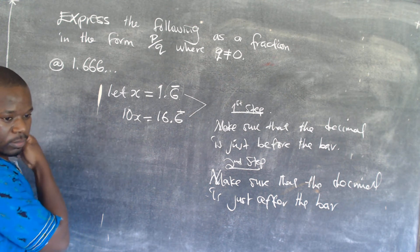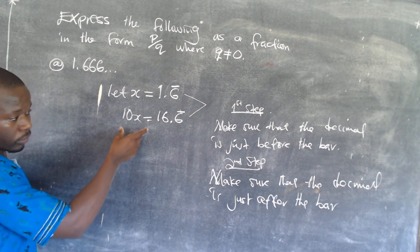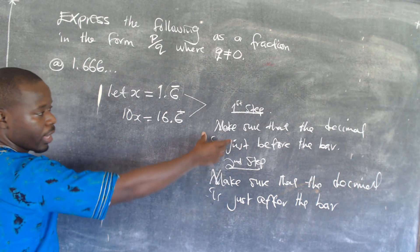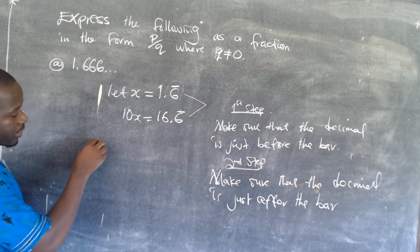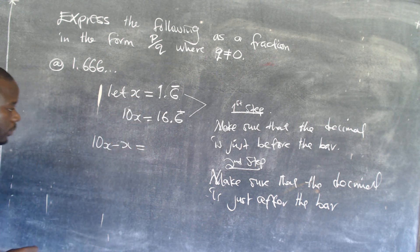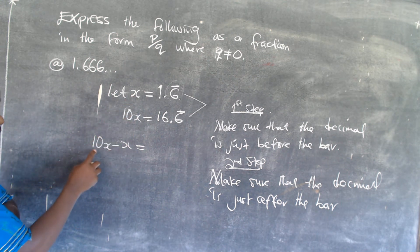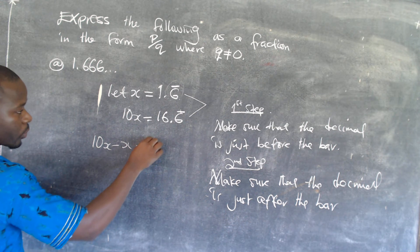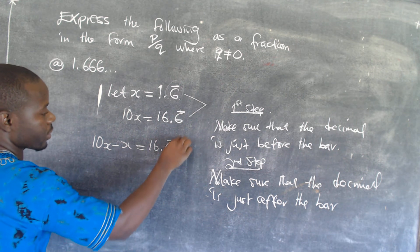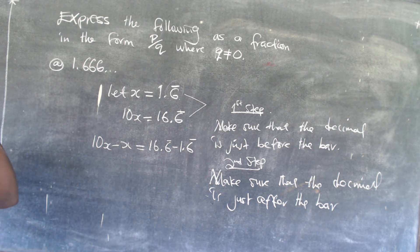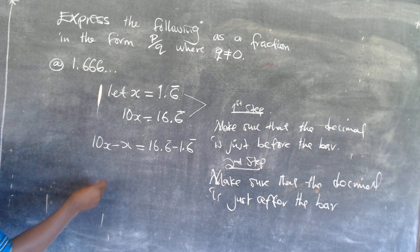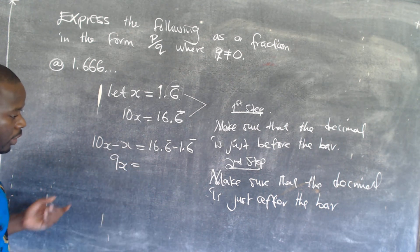The expression that you got from step 2 minus the expression from step 1: this means that this is going to be 10x minus x. You subtract the second from the first, so you have 10x minus x is equal to 16.6̄ minus 1.6̄. Remember that 10x minus x just gives you 9x.